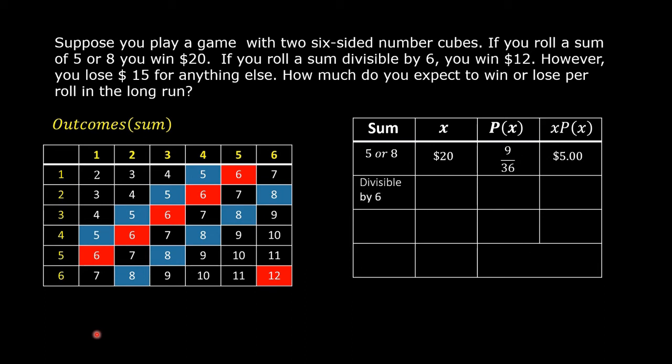The next sum is divisible by 6. According to the problem, if you roll a sum divisible by 6, you win $12. So, $12 is the second value of x. Let us count the sums divisible by 6: 1, 2, 3, 4, 5, 6. There are 6 of them. So, the probability of winning $12 is 6 out of 36. Multiply $12 by 6 over 36. The product is $2.